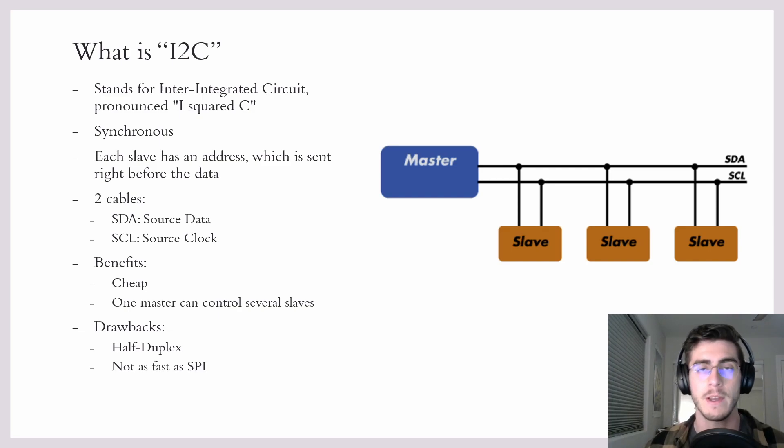So the benefits of this system is that because there are only two cables it is cheaper. One of the drawbacks is that because there are only two cables you can only send data either from the master to the slave or from the slave to the master at one time.